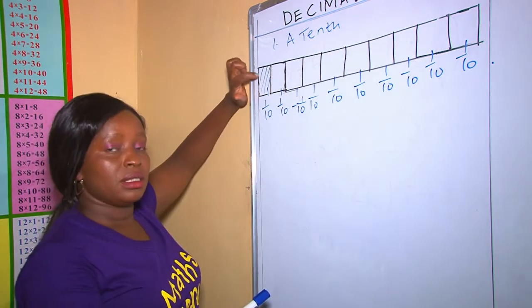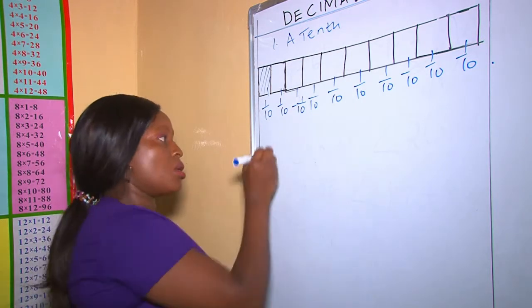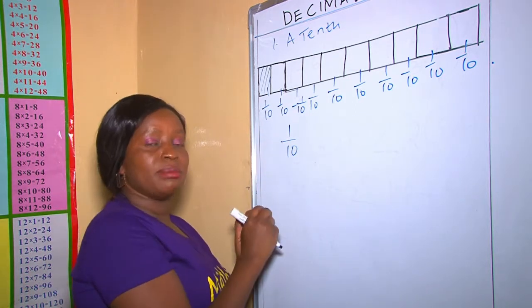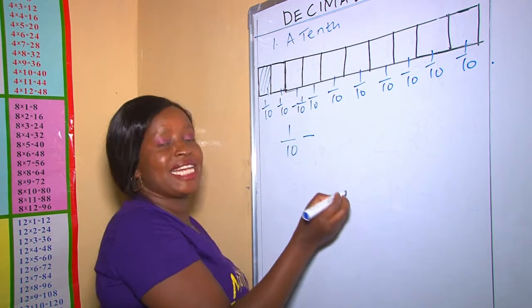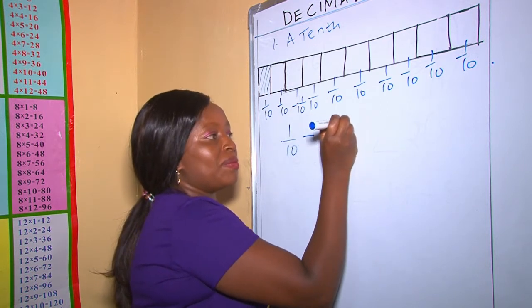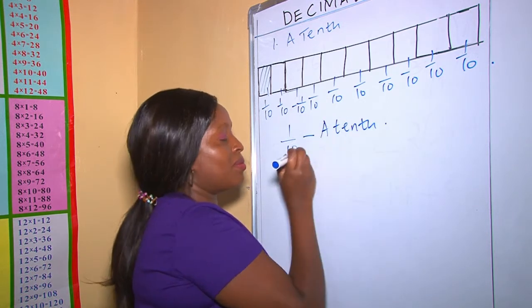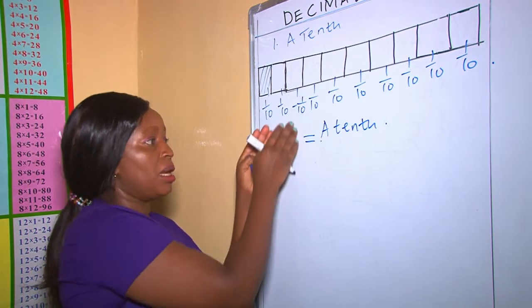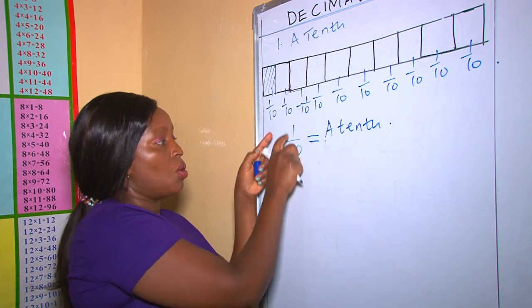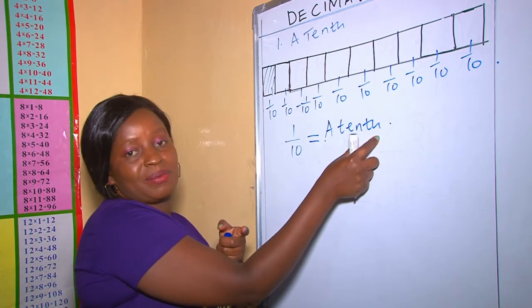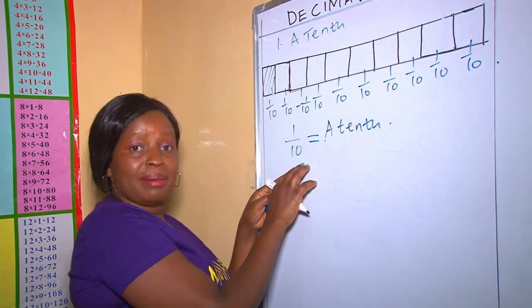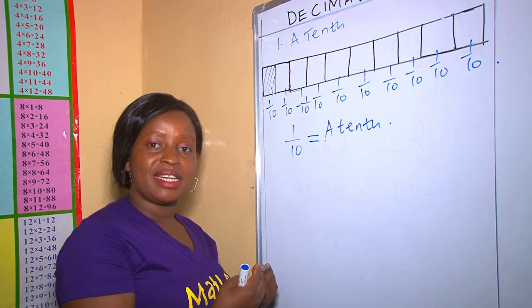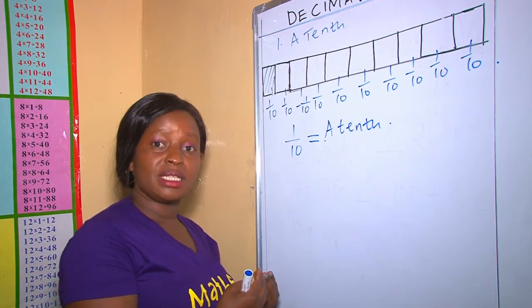The part shaded is 1 out of 10 parts. This fraction can be written in words as 'one tenth.' So this fraction can either be written in symbols or in words. This 1 over 10 is what you call a tenth. The same answer can be written in terms of decimals — a decimal is a point placed in between numbers.